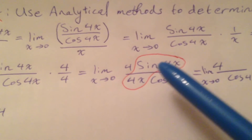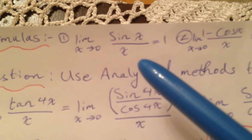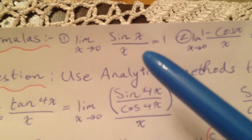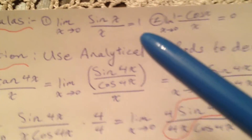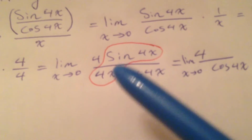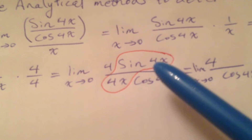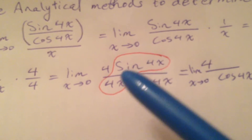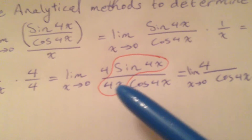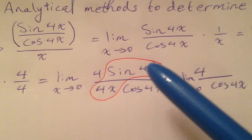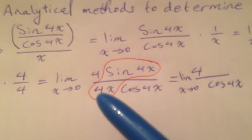This part — sine(4x) over 4x — equals 1 according to the rule: limit x approaching 0 of sine x over x equals 1. Since the angle inside is 4x and the denominator is also 4x, they match, so it equals 1. Remember: the angle and the denominator must be the same to apply this rule. For example, if we have sine(4θ) we must have 4θ in the denominator.